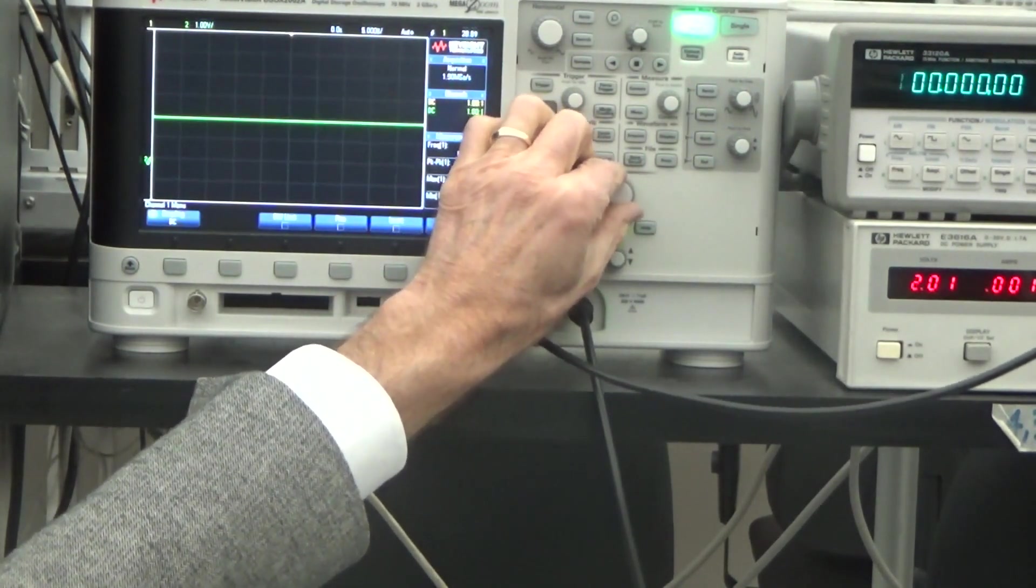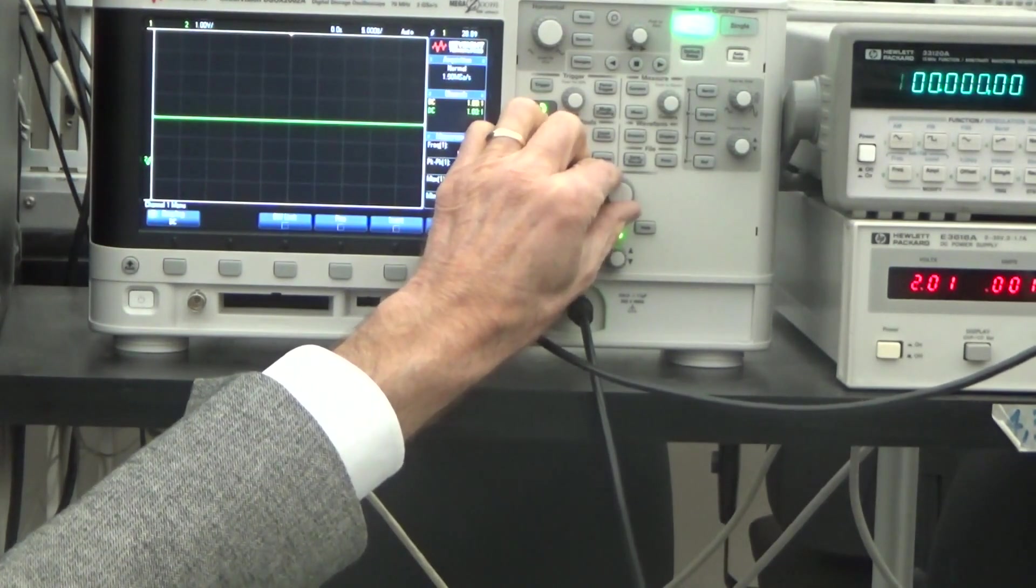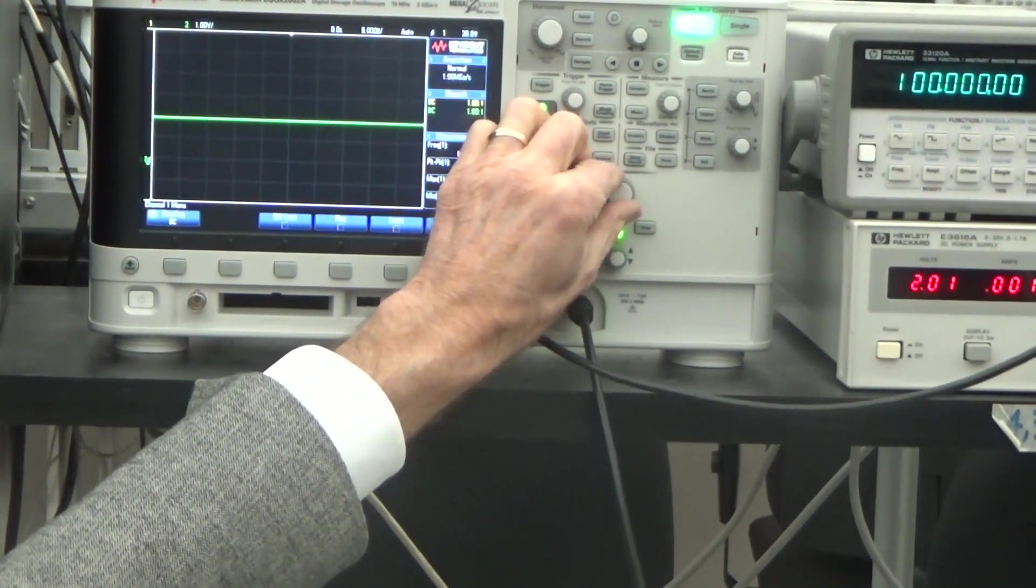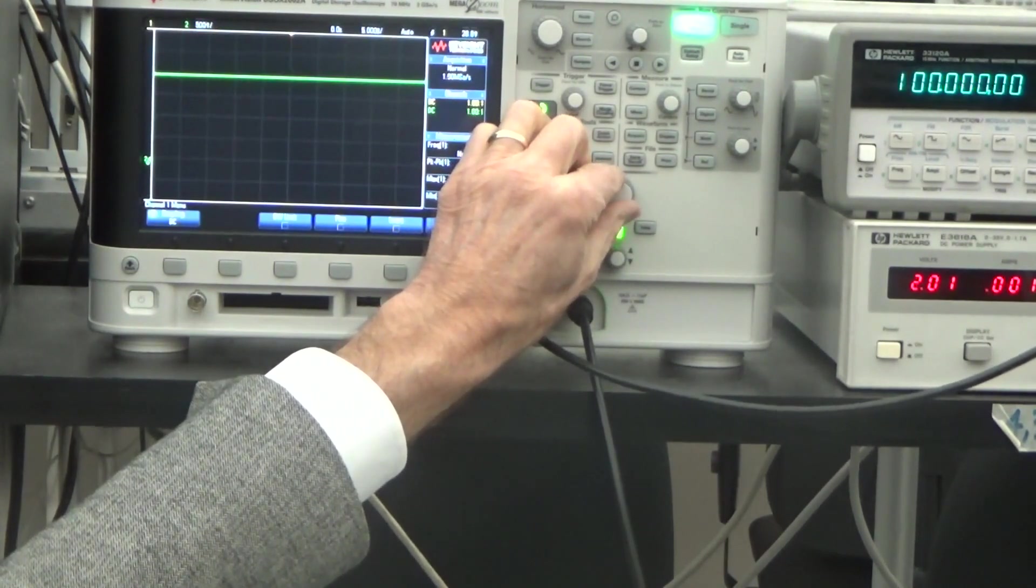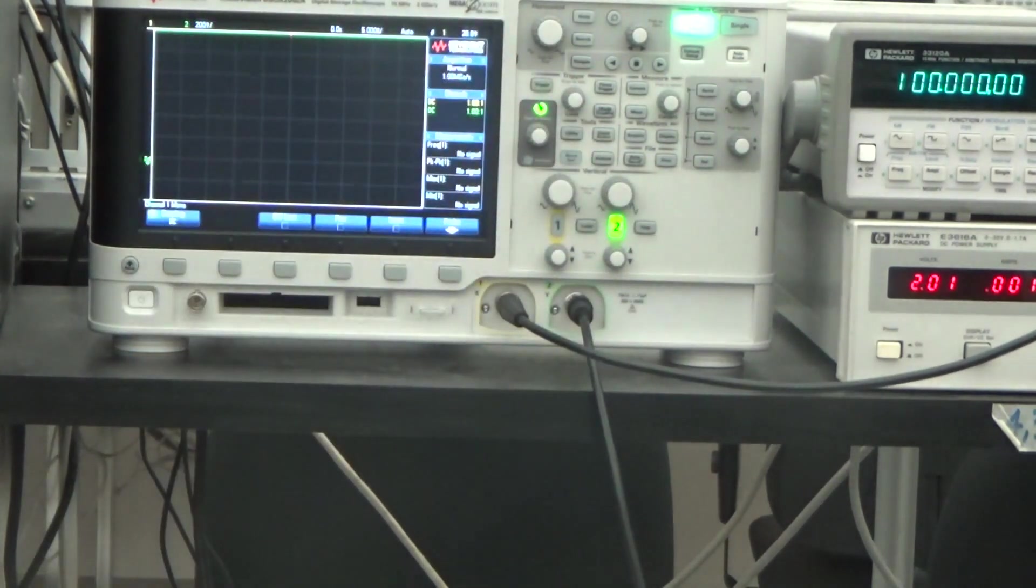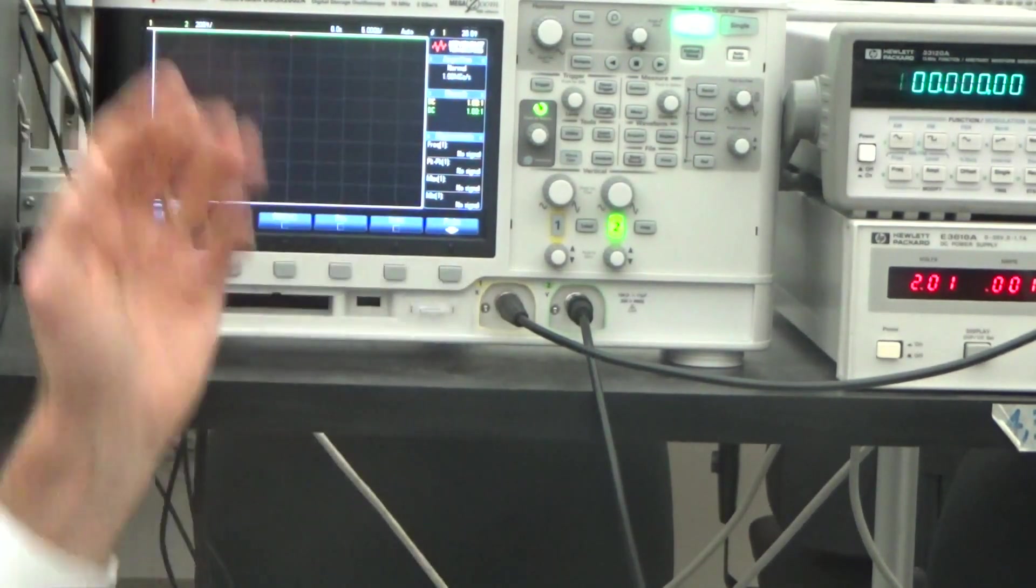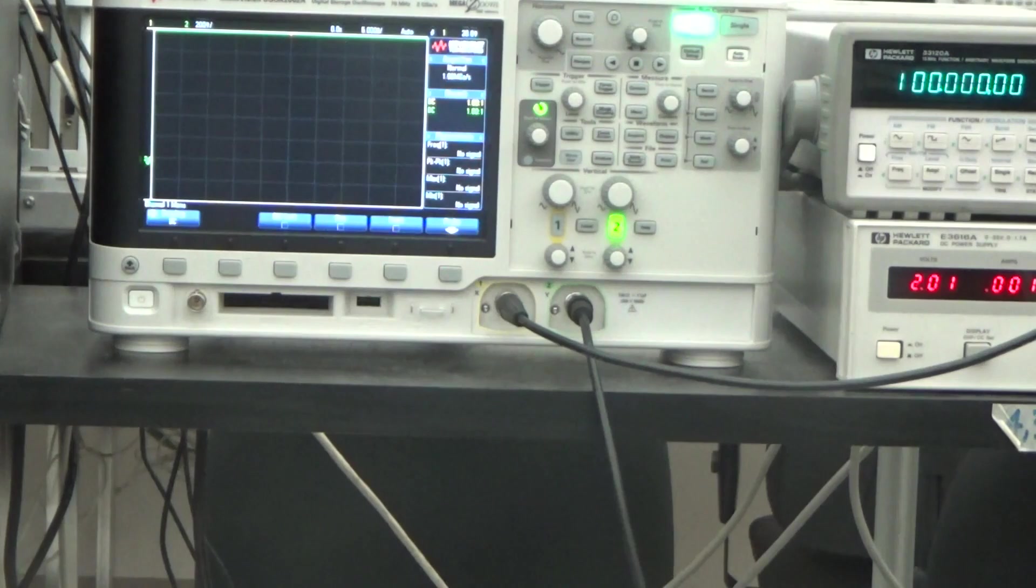And you can see I'm making it more sensitive. It's now 1 volt per division. And here's a half a volt per division. And it's still looking pretty good. But if I get more sensitive than half a volt per division, the display is off scale.